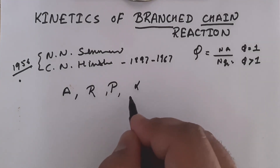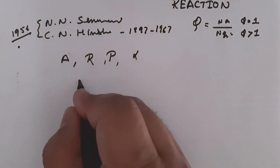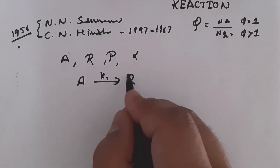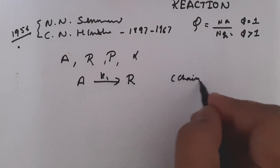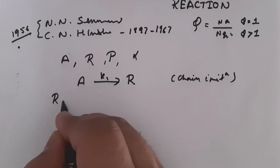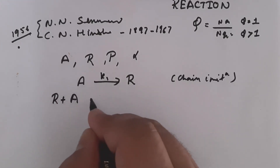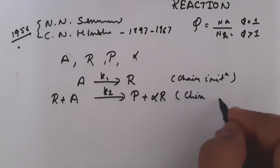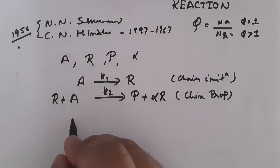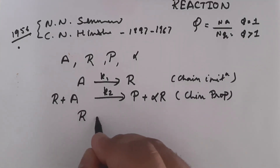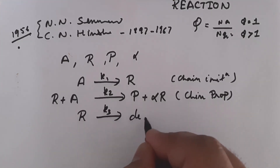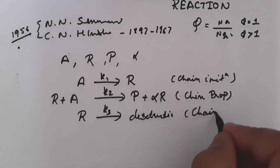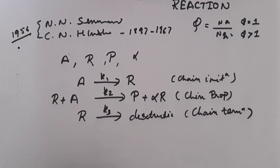The steps are: first, chain initiation — A converts to reactive chain carrier R with rate constant k1. Second, chain propagation — the active carrier R reacts with A with rate constant k2 to give product P plus alpha R. Third, chain termination — the reactive carrier R is destroyed with rate constant k3.